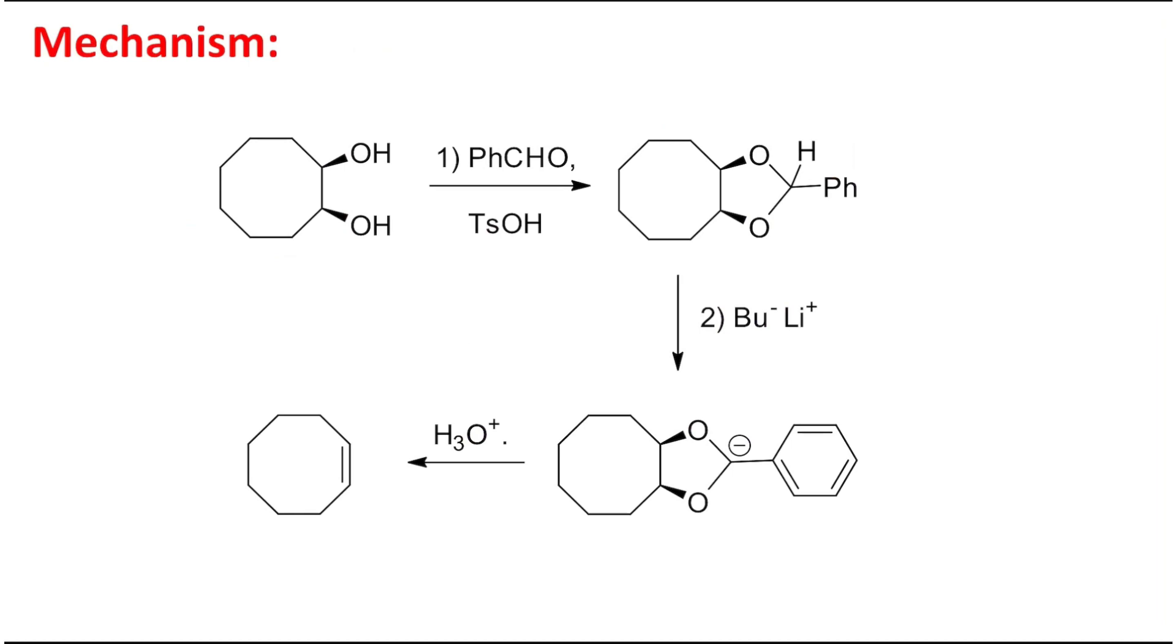Remember, students, aldehydes are more active for acetal formation than ketones due to lesser bulkiness. During this acetal formation, one molecule of water will be produced, which is removed generally by Dean-Stark apparatus. For example, you can do this reaction in toluene solvent, and through azeotropic distillation you can remove the byproduct water and make the equilibrium move in the forward direction.